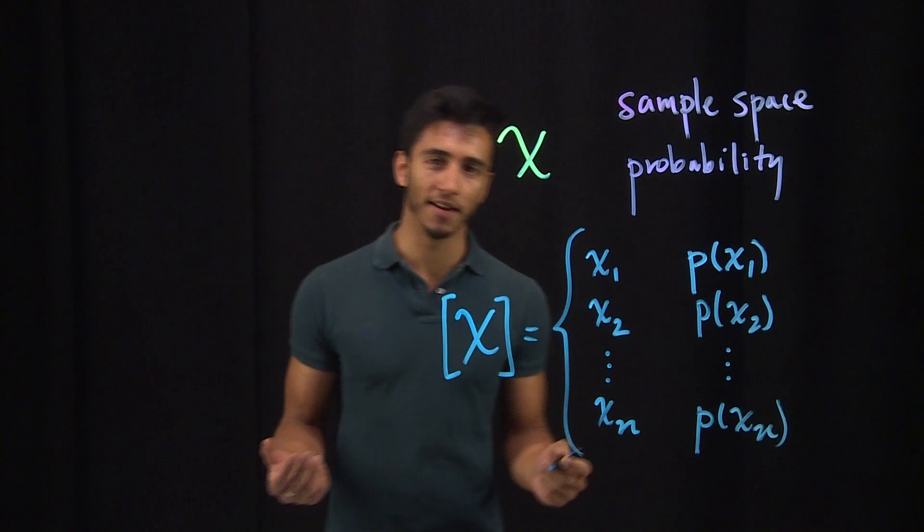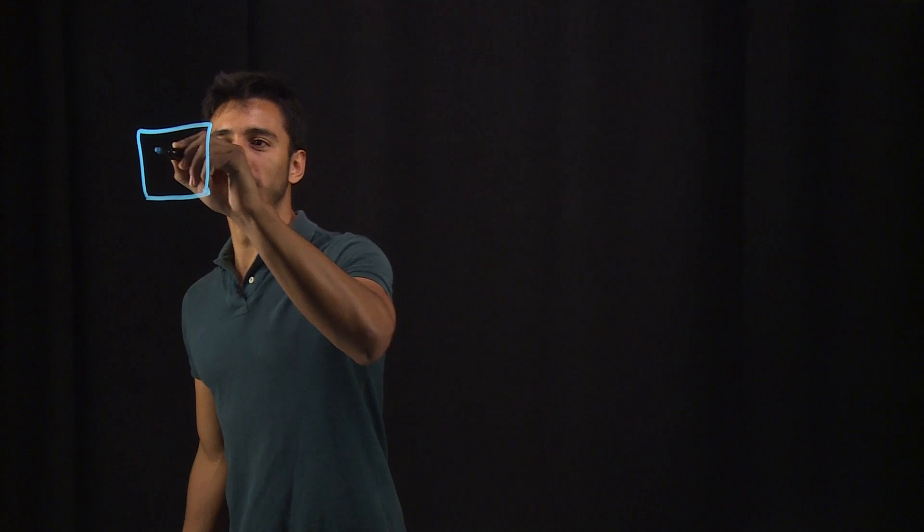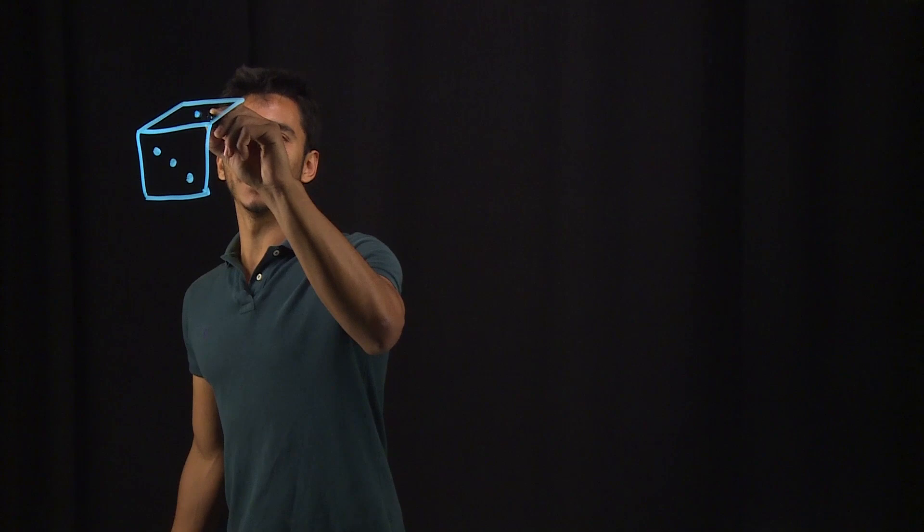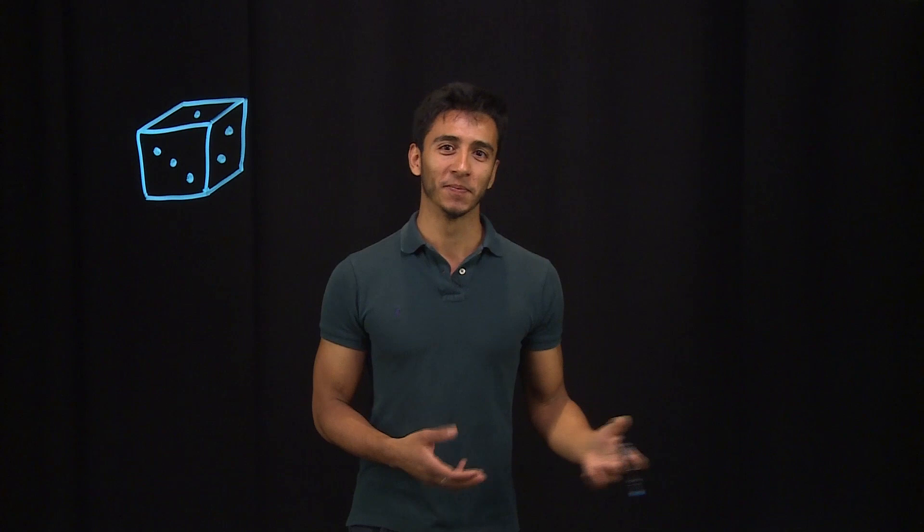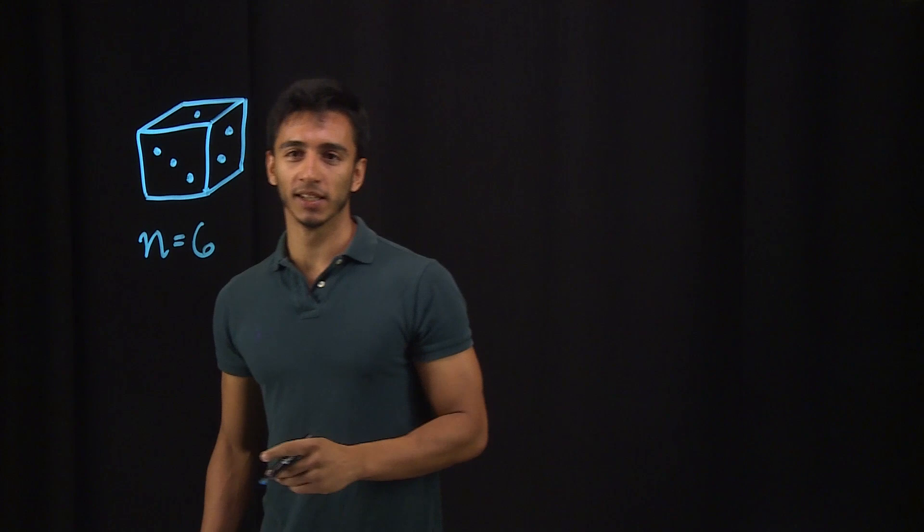So what is an example of a random variable? We can think of a die. Let's draw a die. So this is our ordinary six-sided die. When we toss this die, how many values can we get? We can get six. So we say that n is equal to six. Our sample space has six elements within it.